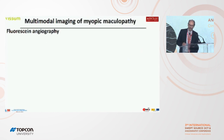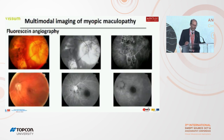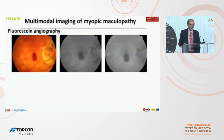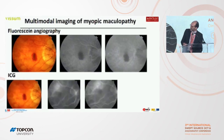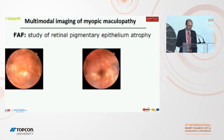In some cases, we need to study myopic maculopathy with fluorescein angiography to detect choroidal neovascularization with or without blood, as in these two cases. In other cases, where there is a lot of blood, it is necessary to perform ICG indocyanine green angiography to discard, in this case, the absence of choroidal neovascularization, as you can see in the normal evolution without treatment in this patient.